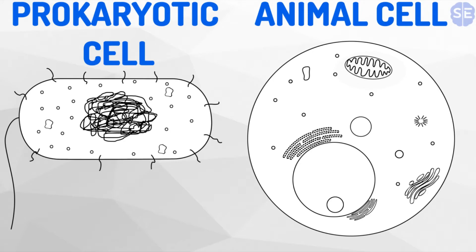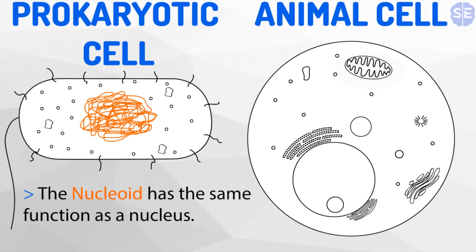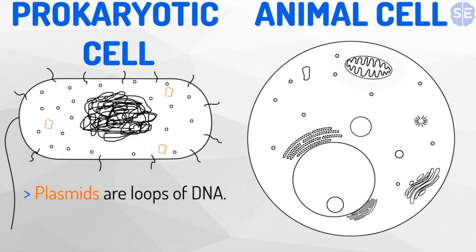Prokaryotic cells are much smaller and different structurally than eukaryotic cells. Instead of compact, contained DNA in a nucleus, prokaryotic cells have a free-floating nucleoid. The free-floating nucleoid allows transcription and translation to take place simultaneously. Not only is DNA within the nucleoid, but DNA is also kept as small loops called plasmids throughout the cell. These plasmids can move between prokaryotes to pass on different traits.